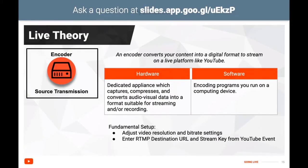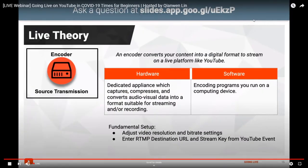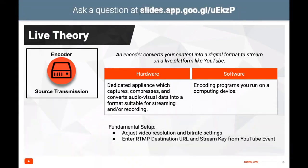Next we have the encoder, which converts your content into a digital format to stream on YouTube. Some encoders are software applications on your computer, while others are standalone hardware. The hardware solution is a dedicated appliance that captures, compresses, and converts audio-visual content into a format suitable for streaming. A software solution is an encoding program you run on a computing device, and the performance of the stream depends on how well the media can be encoded and transcoded in real time. The performance of the device is critical.